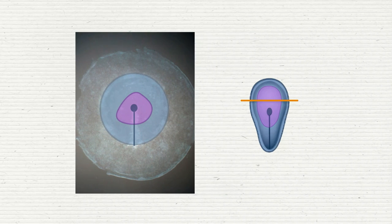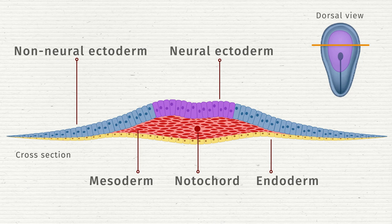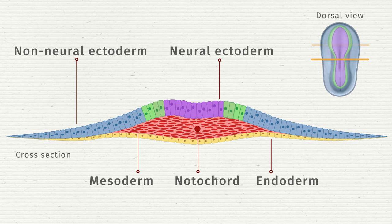Underneath the ectoderm, there is the forming mesoderm. Later, but still during gastrulation, a third domain appears on the border between the non-neural ectoderm and the neural ectoderm, the neural plate border.